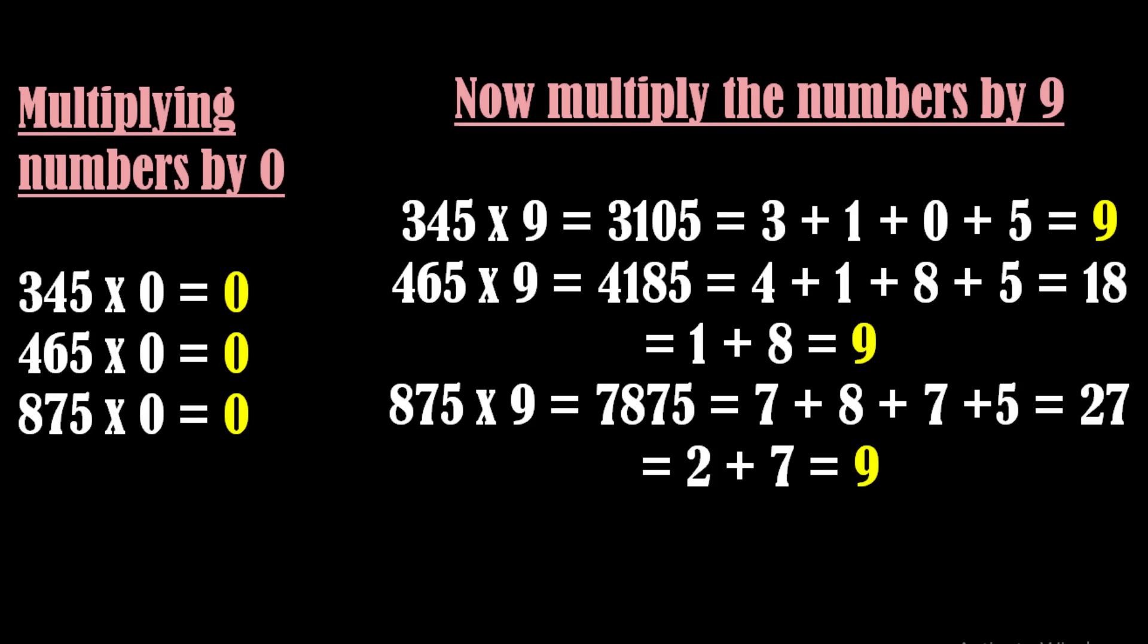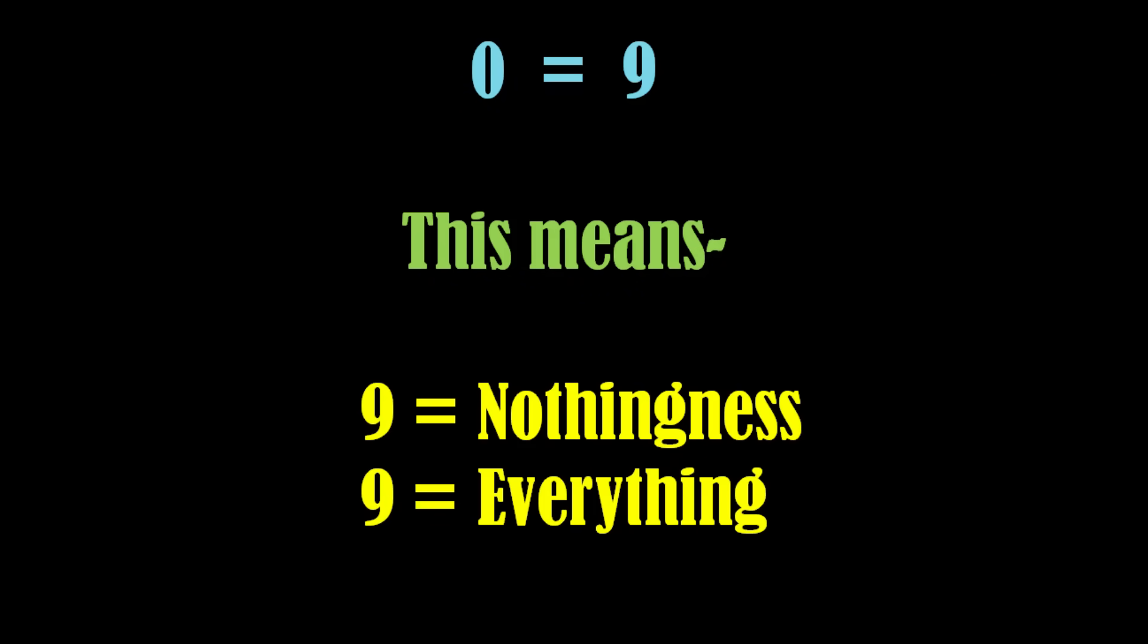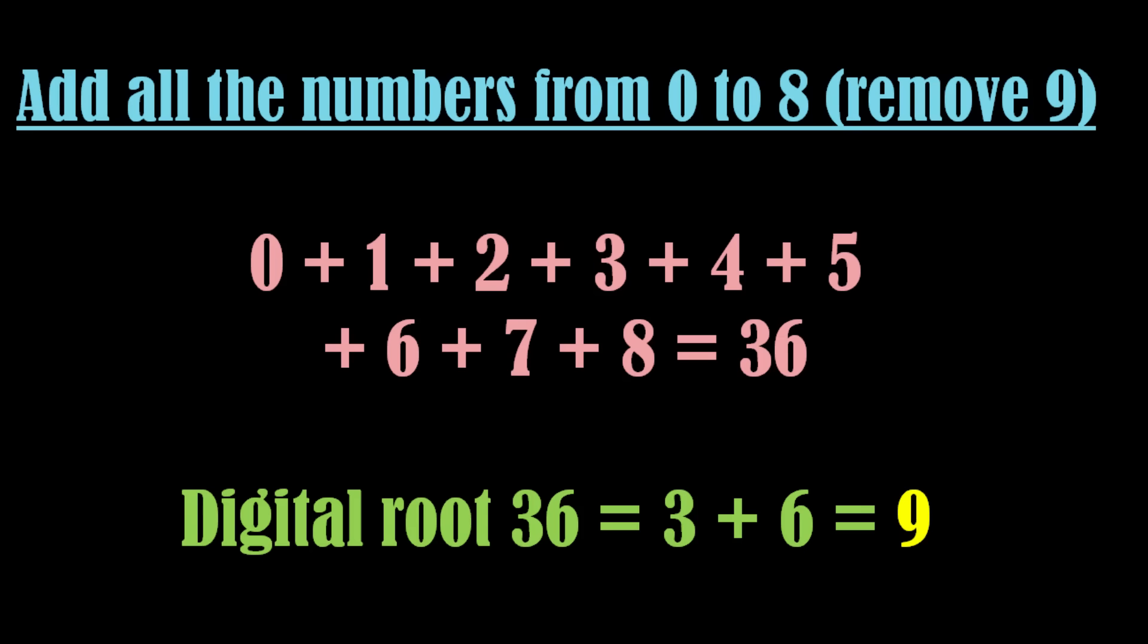One more thing, as we get 0 on multiplying any number by 0, in the same way we get number 9 as the digital root on multiplying it with number 9 since 0 is same as 9. Let me tell you one more amazing fact about number 9. If we add all the numbers except number 9, that is from number 0 to number 8, the sum reduces to number 9.